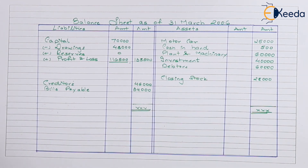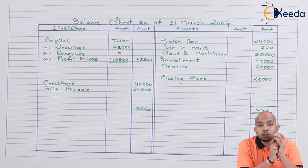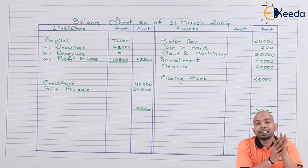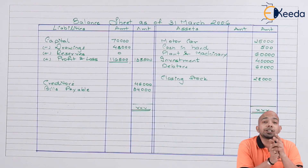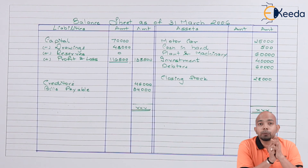Going forward, in the next videos we'll be starting with basic adjustments and then moving on to how complete adjustment problems are supposed to be solved. With this illustration, I hope you have clarity on how to prepare trading account, profit and loss account, and balance sheet — and that segregation is the first process while preparing final statements, with marking adjustments having two effects being the second part.